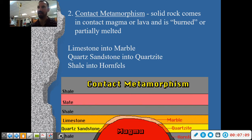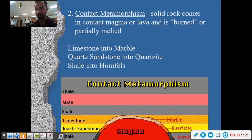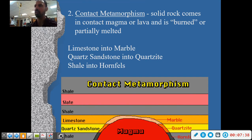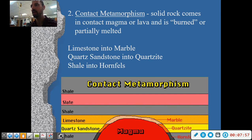Contact metamorphism is when rock comes into contact with magma and is partially burned or partially melted. As a result, you get new crystal growth. Limestone, for example, turns into marble. We call limestone marble's parent rock — the parent rock is what it was before it changed. In science we use the parent-daughter relationship: limestone is the parent rock and marble is the daughter rock. Quartz sandstone turns into quartzite, and shale turns into hornfels.